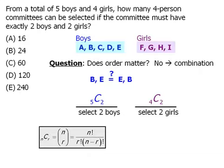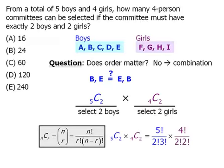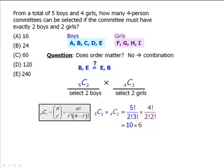So the total number of ways to accomplish both stages will be equal to the product of these values. So our task now is to evaluate this. Well, using our formula, we see that this is equal to the following, which is equal to 10 times 6, which is equal to 60. So our answer is C.